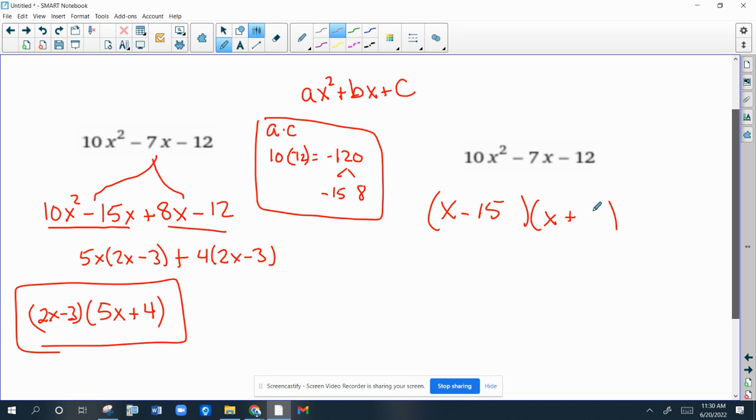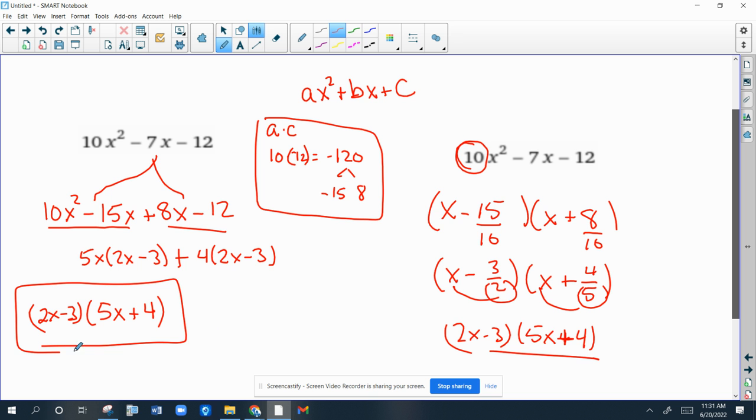x minus 15x plus 8. But then, put both those numbers over a, and then reduce, so negative 15 over 10 reduces to 3 halves, and 8 over 10 reduces to 4 fifths. And then take the bottom of those fractions, and move them in front of the x. So this would be 2x minus 3, and this would be 5x plus 4. And you can see, it works. We got the same thing.